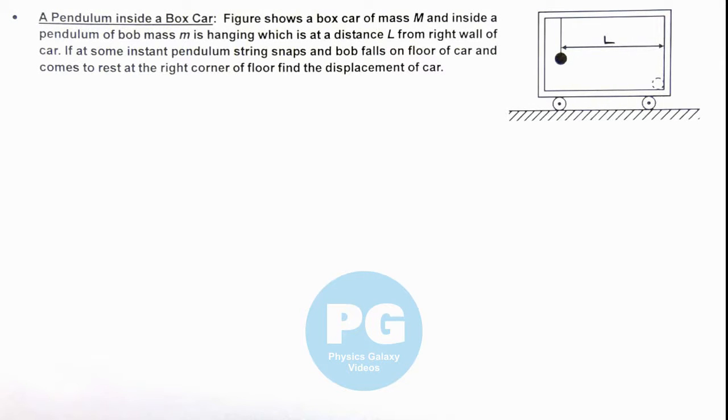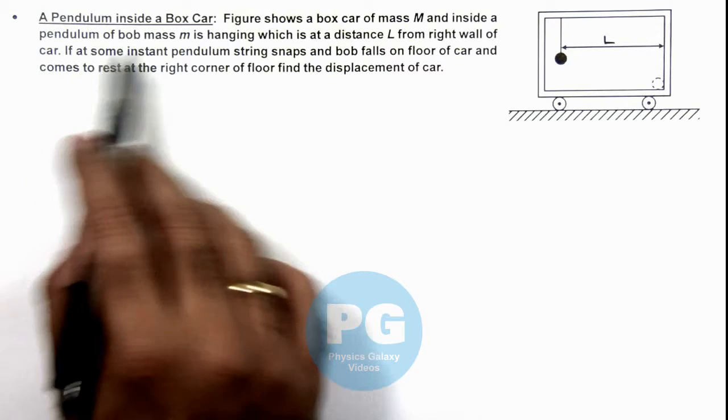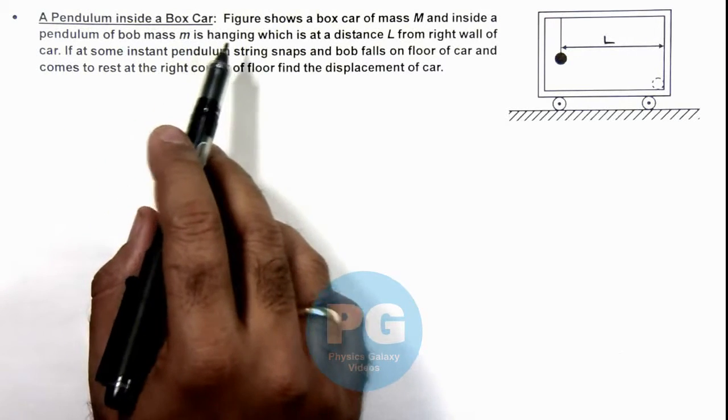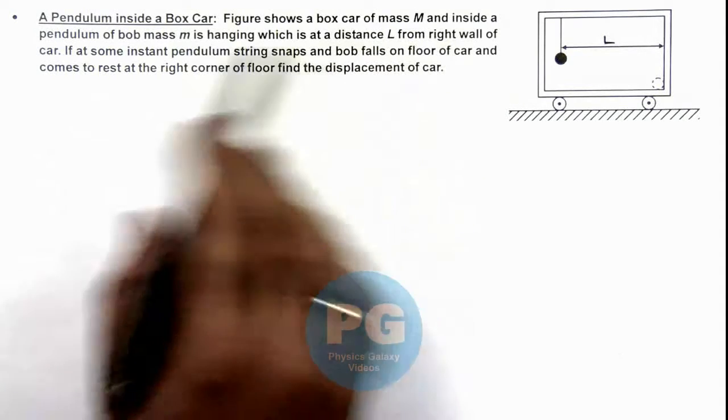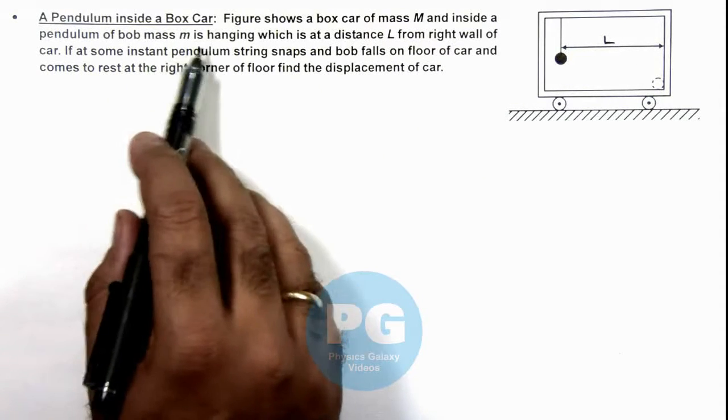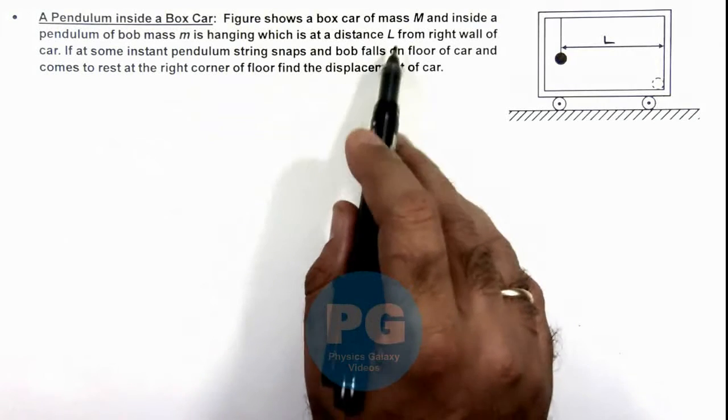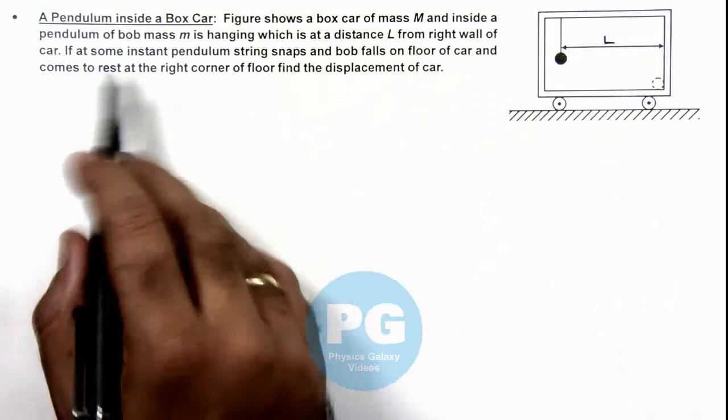In this illustration, we'll discuss a pendulum inside a box car. The figure shows a box car of mass M, and inside a pendulum of bob mass m is hanging, which is at a distance L from the right wall of the car.